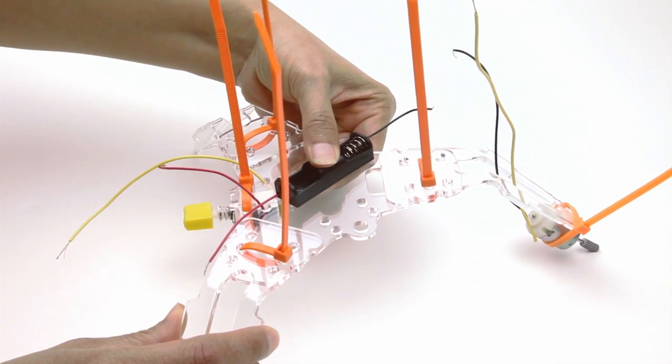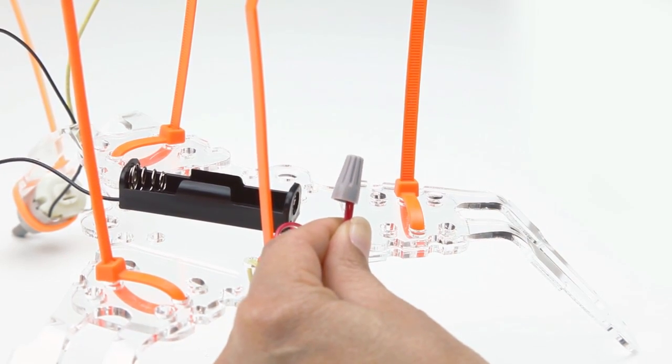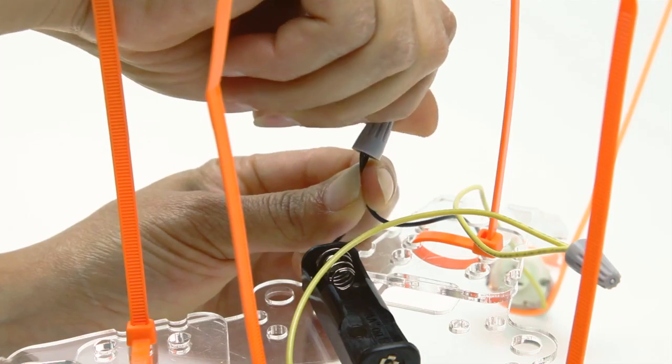Then use the tape to stick the battery box to the top of the body. Twist the red wires together, and then twist on a wire nut. Then do the same for the yellow and black wires.